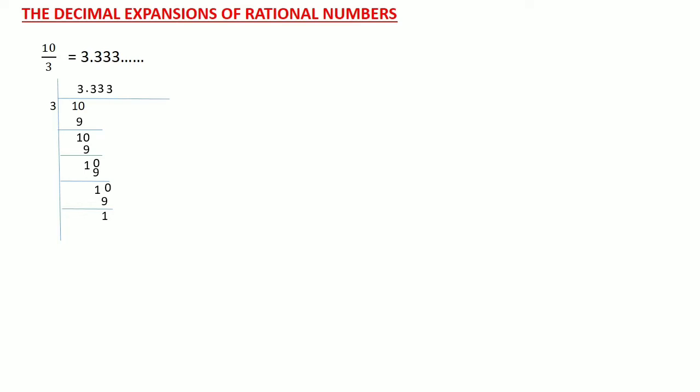The remainder of 1 continues — the division does not end. Hence the decimal expansion of the rational number 10 upon 3 is 3.333..., where 3 repeats. Consider another example of a rational number 7 upon 8. Here 8 is the divisor and 7 is the dividend.